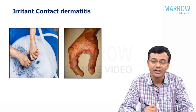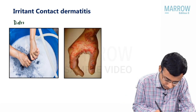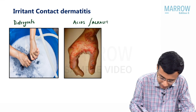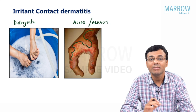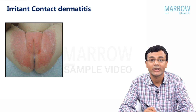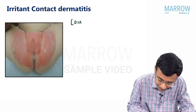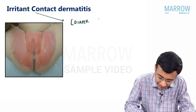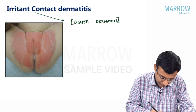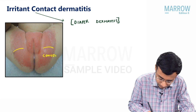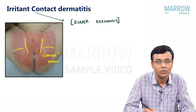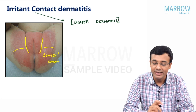Let's look at common examples for irritant contact dermatitis: detergents, acids, and alkalis. Extremely good demarcation is seen in irritant contact dermatitis. A special type very common in children who wear diapers is diaper dermatitis, which is an example of irritant contact dermatitis. This condition involves the convex areas, and in diaper dermatitis the folds are spared — only the convex areas corresponding to the diaper are involved.